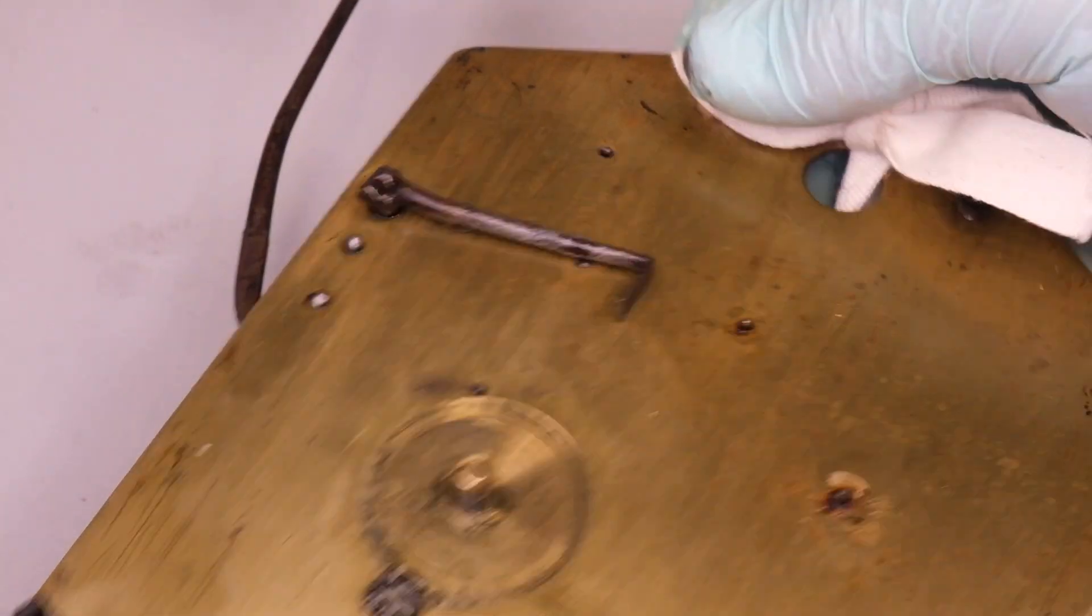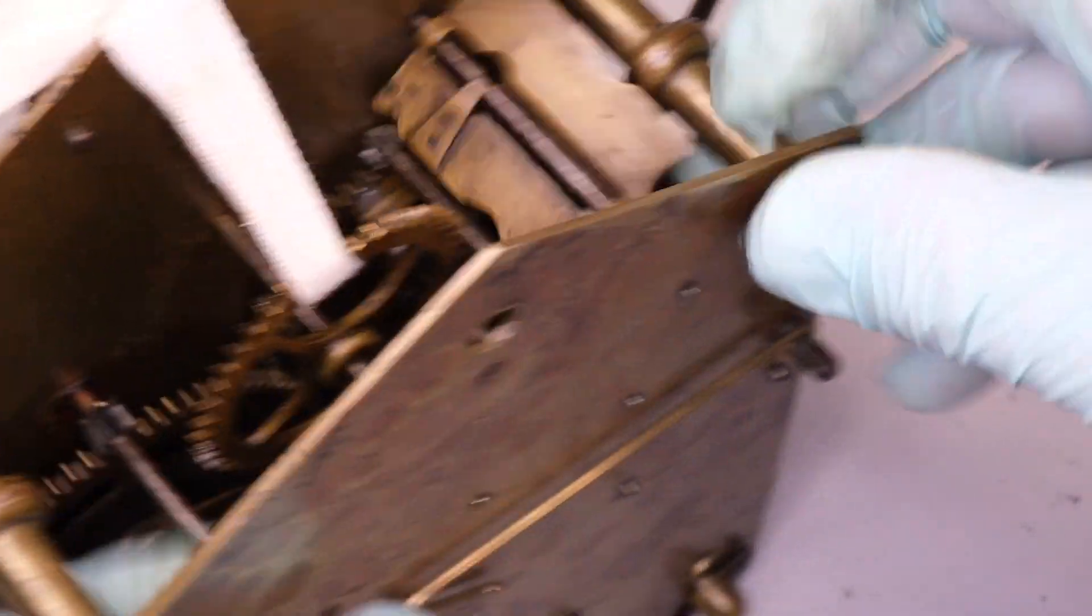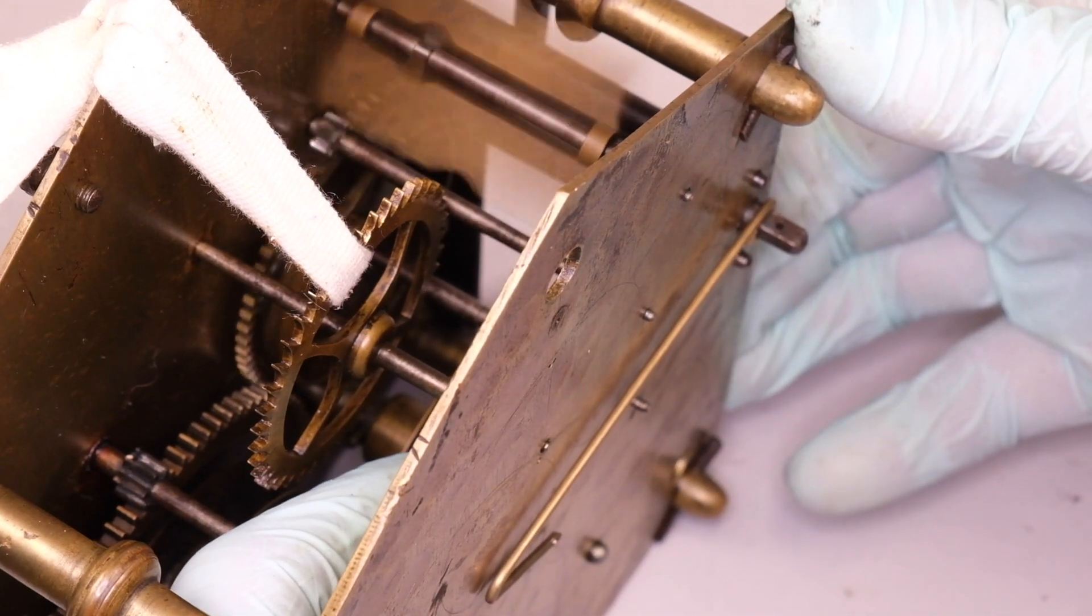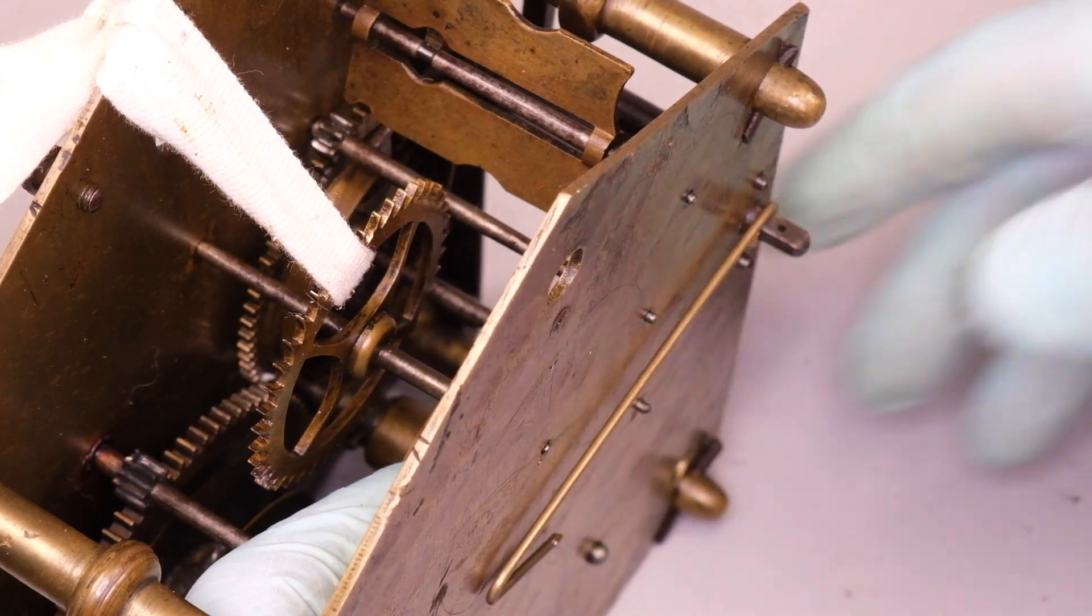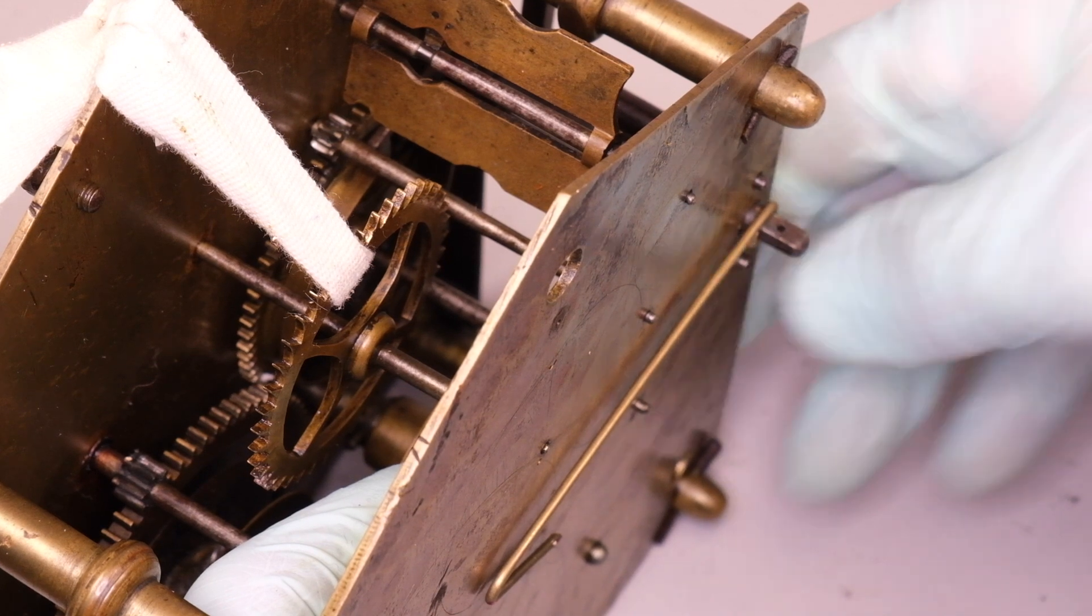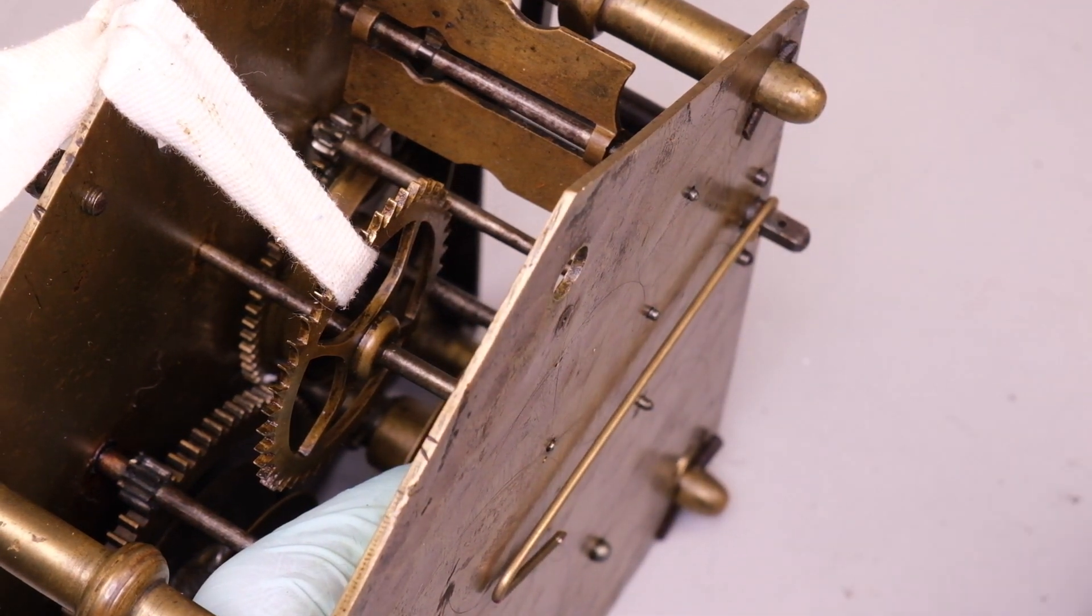In order to make the testing easier, I'm going to remove the cam wheel, which means that the clock will just run through one striking cycle every time it's released. It just speeds things up a little bit.